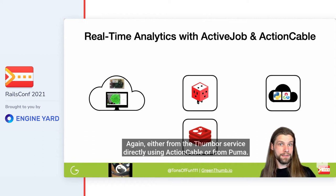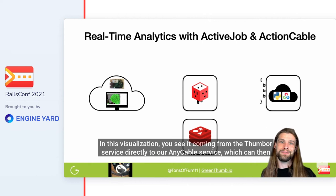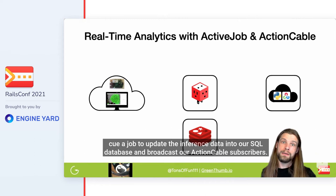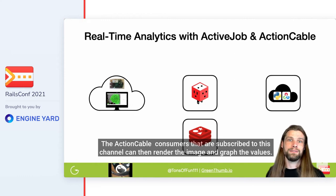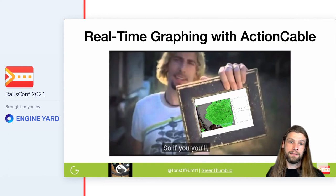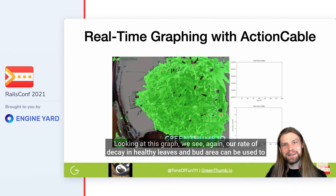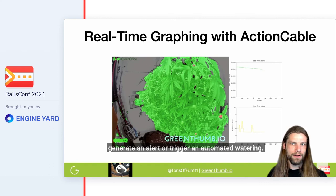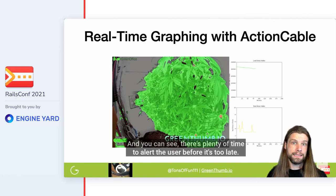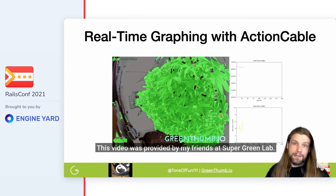The job will make a request to the Thumbor image service to process the image URL and send back a response to the channel's report action. Sidekiq handles the third-party API request to Thumbor to keep external requests in the background and off our Puma workers. The report action will then receive a message either from the Thumbor service directly using Action Cable or from Puma. In this visualization, you see it coming from the Thumbor service directly to our AnyCable service, which can enqueue a job to update the inference data into our SQL database and broadcast to our Action Cable subscribers. The Action Cable consumers subscribed to this channel can then render the image and graph the values, showing the rate of decay in healthy leaves and bud area, which can be used to generate an alert or trigger automated watering.